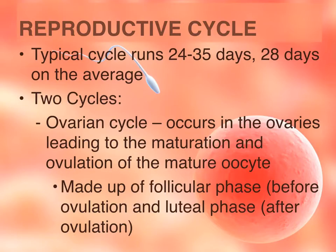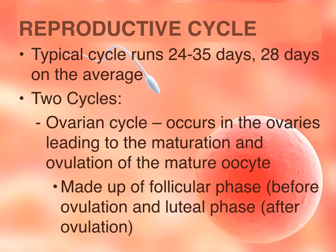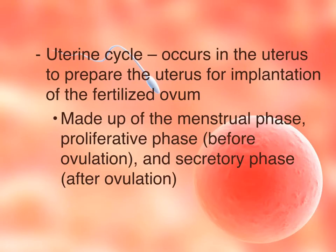There are two cycles that make up the reproductive cycle. There is the ovarian cycle, which occurs in the ovaries and shows the maturation of the follicle, the maturing oocyte, and the various hormones involved. The two phases of the ovarian cycle are the follicular phase, which comes before ovulation, and the luteal phase, which comes after ovulation. The uterine cycle is also called the menstrual cycle and it occurs in the uterus — it is the preparation the uterus goes through for implantation and pregnancy. It is made up of the menstrual phase, the proliferative phase (before ovulation), and the secretory phase (after ovulation).